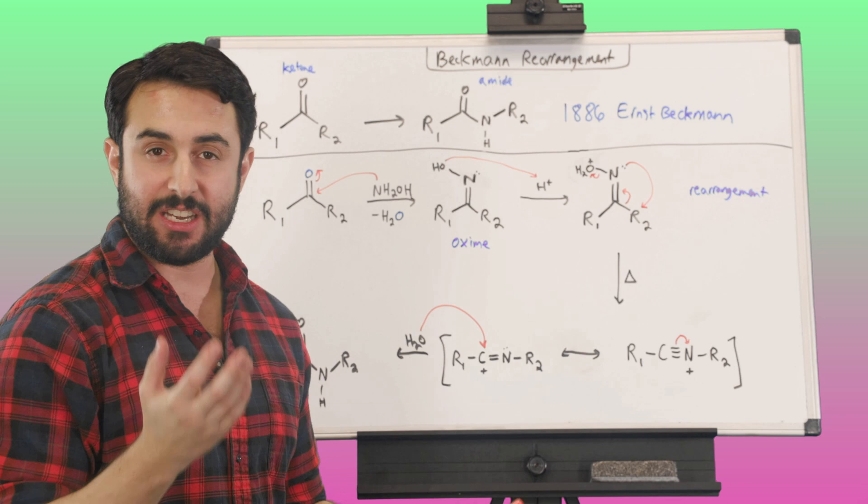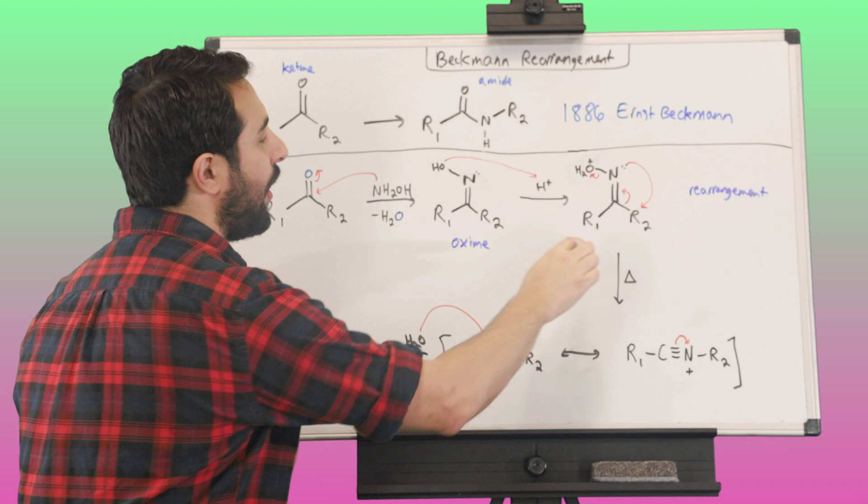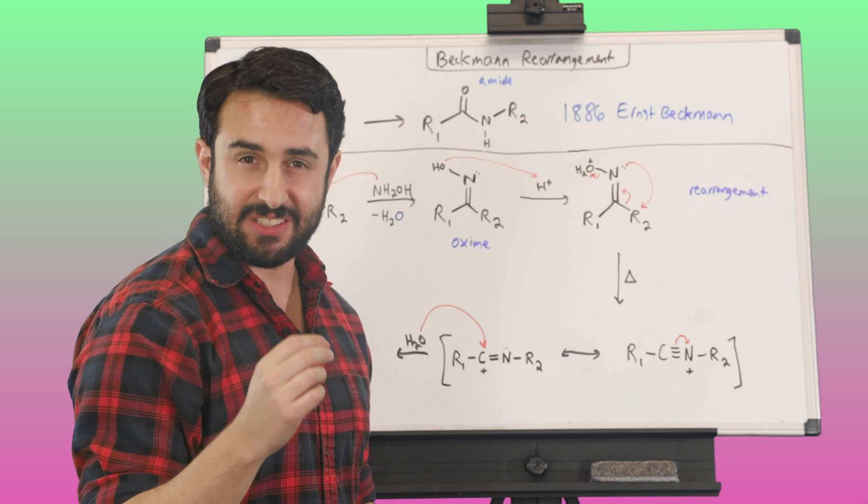...we can get a discrepancy where we then have to decide which R group is going to be the one that migrates in the rearrangement. And so we could go over many examples, but just to summarize, basically, the R2 group in this case, the one that is migrating, because this sigma bond is sort of dissipating as this one is forming, it does have to sustain a very slight partial positivity in the migration.